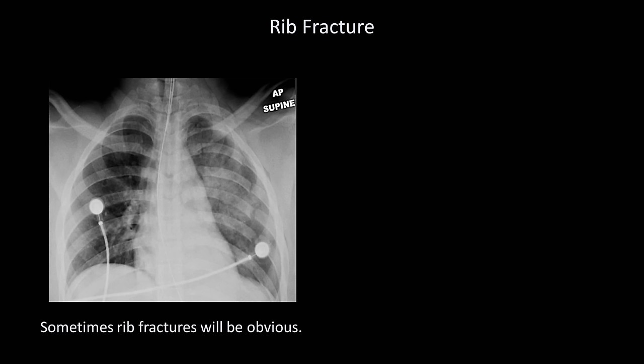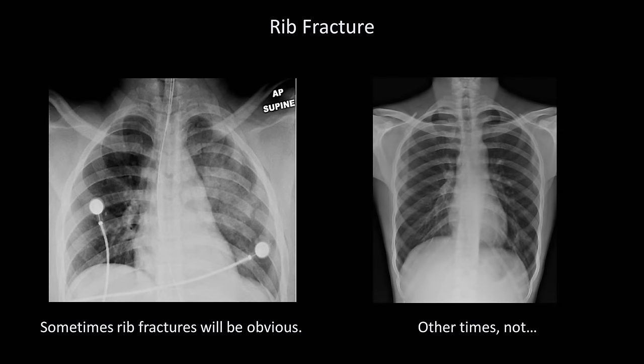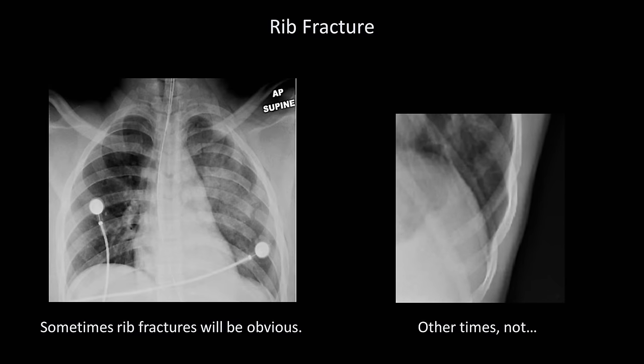First, rib fractures. Sometimes they will be very obvious — in this case the patient has numerous fractures of his posterior left ribs, almost certainly from high-impact blunt force trauma. Other times a rib fracture may not be obvious at all; this next example is probably invisible unless we zoom way in. Unless given a history of left-sided chest pain after a fall, a fracture this subtle would probably be missed on interpretation.